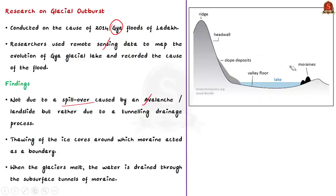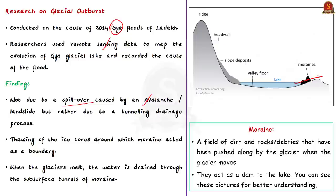The flooding is not due to throwing of a stone in a bucket of water, but due to a hole under the bucket. Similarly, the flooding happened due to thawing of ice cores around which moraine acted as a boundary. Thawing means melting. Himalayas is full of glaciers — a glacier is a huge mass of ice which moves slowly over land. Glaciers form in places where more snow piles up each year than melts; the snow compresses, becomes denser, and transforms into ice. Because of its weight and gravity, the glacier moves slowly, which is why glaciers are called rivers of ice. In Ladakh in 2014, the thawing of ice cores happened — ice turned into water — and moraines acted as a boundary.